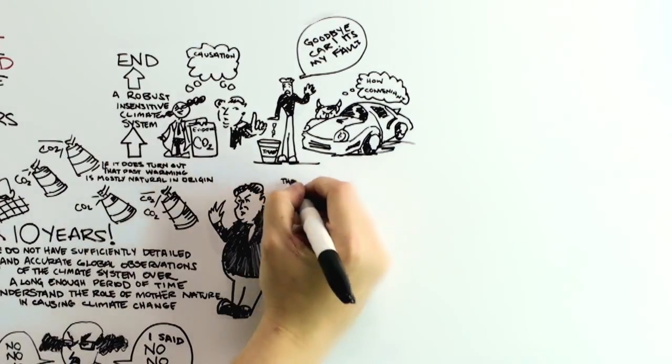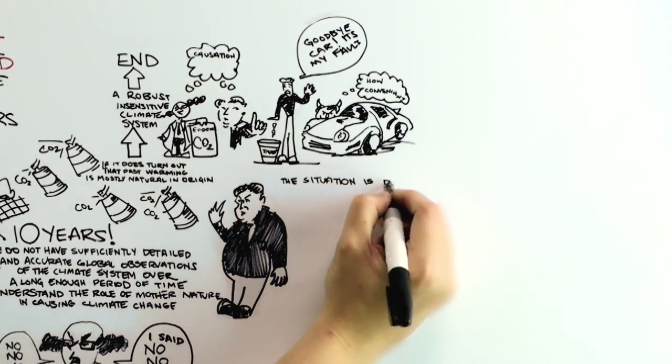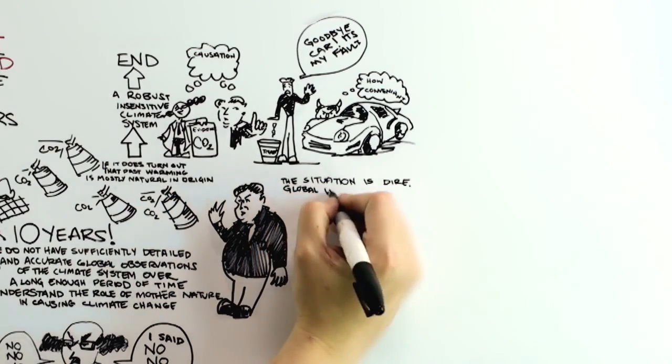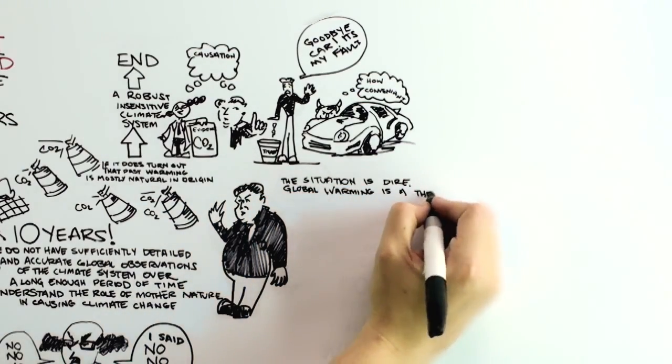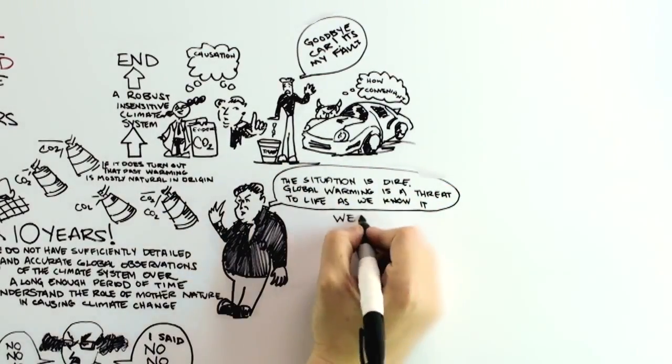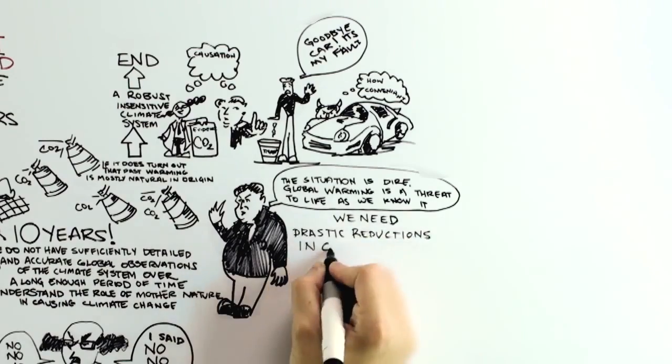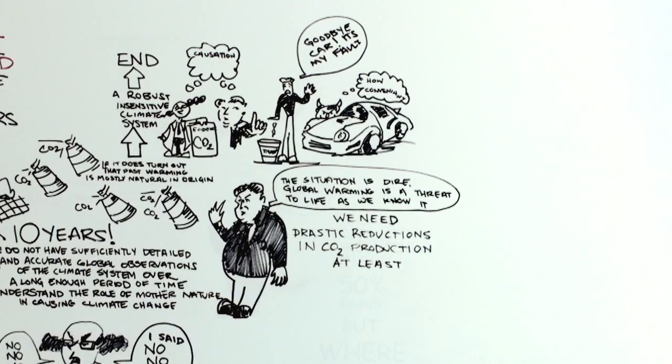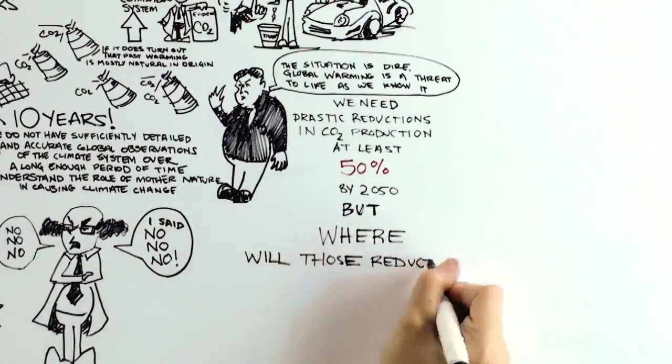If global warming is in fact man-made, and if the dire predictions of Al Gore and his friends are to be believed, and all of this warming is indeed a threat to life as we know it, then what we really need are drastic reductions in our production of carbon dioxide in the coming decades, say at least 50% reductions by 2050. But where will those reductions come from?